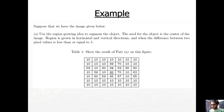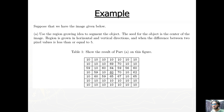We select a start pixel, and that start pixel is connected to 4 neighbors and 8 neighbors. We use 4-neighbor connectivity. We set the criteria: if a neighbor satisfies the criteria, it is included in the region.